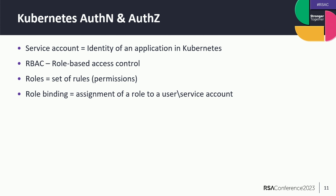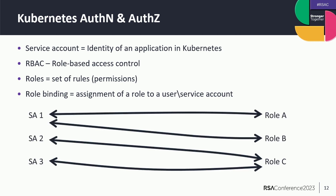Before talking about lateral movements, let's cover a few key terms. Service accounts represent the identity of an application in Kubernetes. The second term is RBAC, or role-based access control. RBAC means we have roles — sets of permissions — and we bind an identity to a role. For example, service account one is bound to roles A and B, service account two to role C, and service account three also to role C.